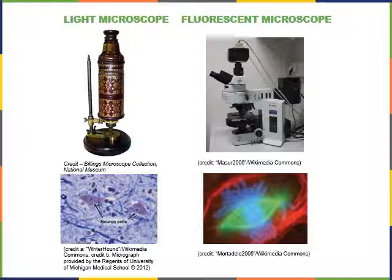A fluorescent microscope is a modification of a modern light microscope. Staining methods have been used for a long time to improve contrast, and a fluorescent microscope uses a special fluorescent dye that absorbs UV light and emits a specific wavelength of visible light. We can use very specific dyes to stain different structures inside a cell. Here we see fluorescent dyes used to stain chromosomes blue, microtubules of the cytoskeleton stained green, and other cytoskeleton structures shown in red.